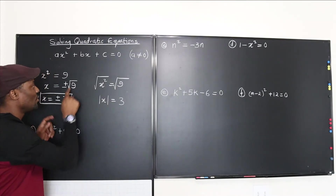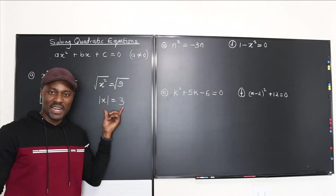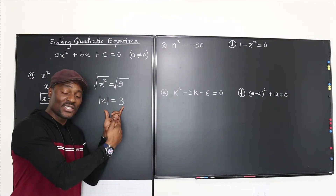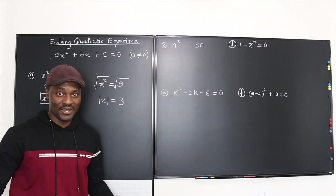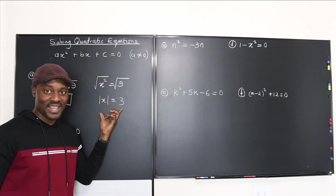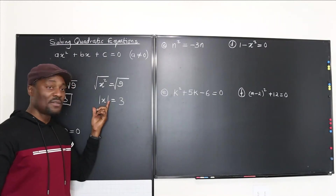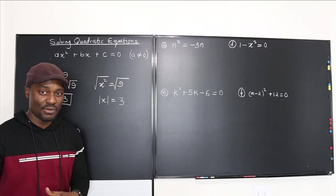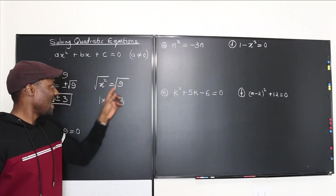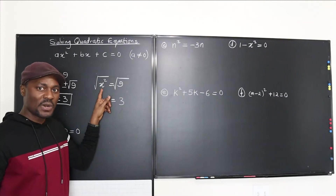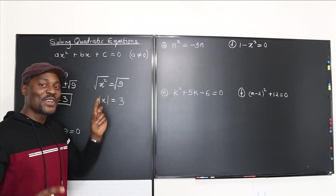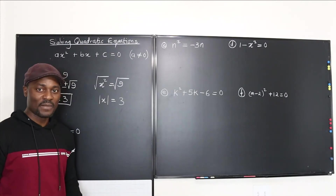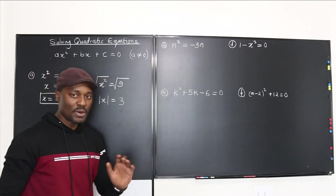We're used to going directly from x² = 9 to x = ±3 without explaining the absolute value step. You'll need that understanding when you take calculus. The absolute value of x represents how far x is from 0, so since you don't know whether x was positive or negative, you get two answers — and that's the basis for it.